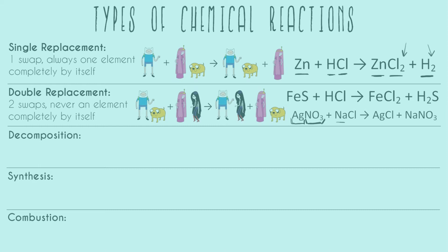Our other component is sodium and chlorine. In the products, we have silver with chlorine — so there was a swap — and the second swap was with sodium, with all of nitrate still staying as one chunk. So with common ions, you can have double replacement reactions involving more than just two elements.